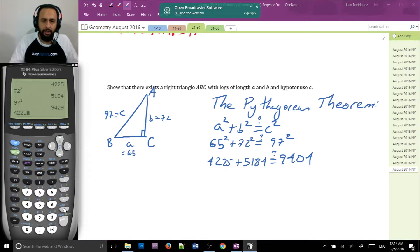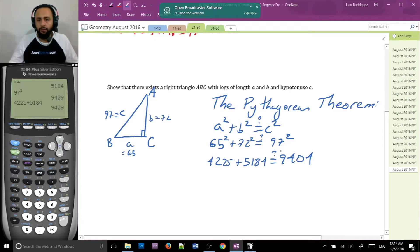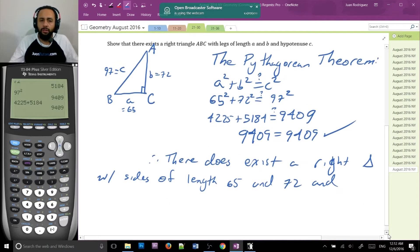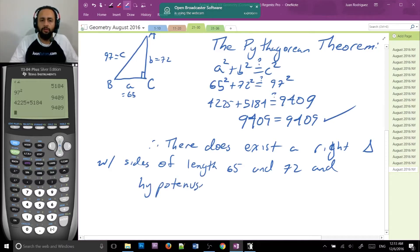4225 plus 5184. Is that 9409? Oh, typo here. I made a typo here. That's 9409. As you can see in this little area, and I just typed it wrong. So, I already wrote it wrong. So, 9409 equals 9407. So, this is it. So, therefore, there does exist a right triangle with sides of length 65 and 72 and hypotenuse 97.